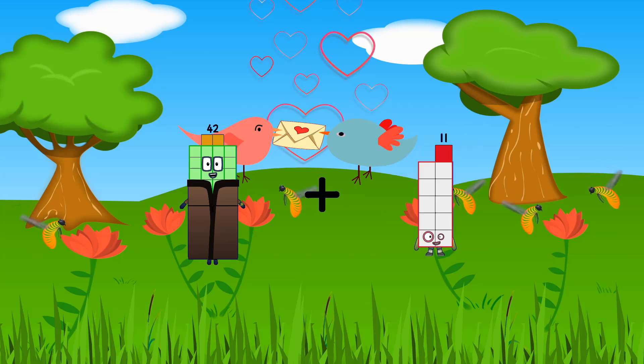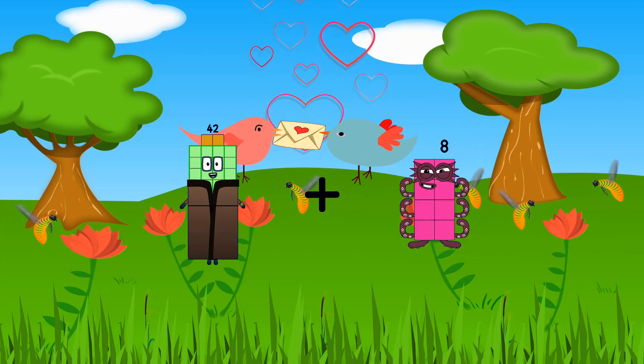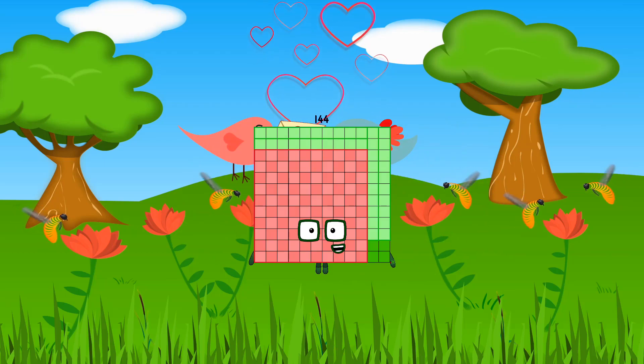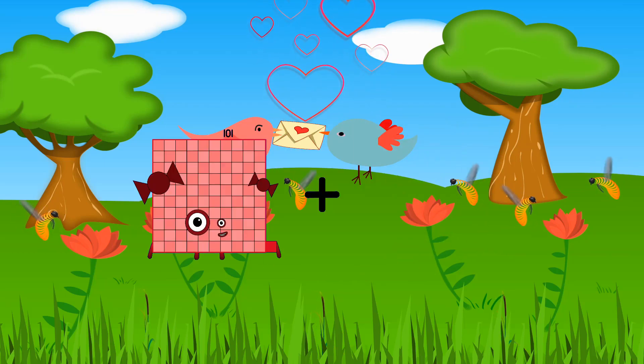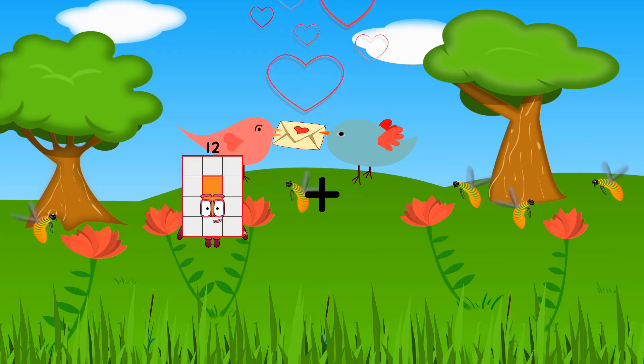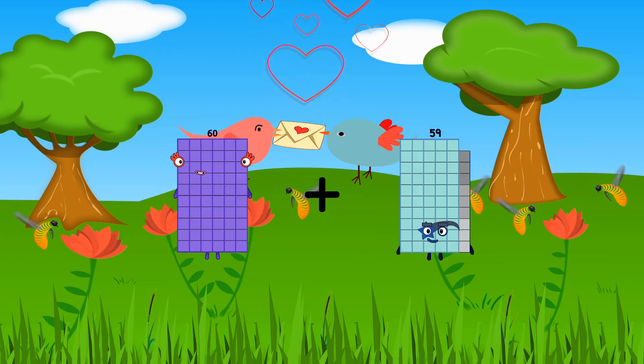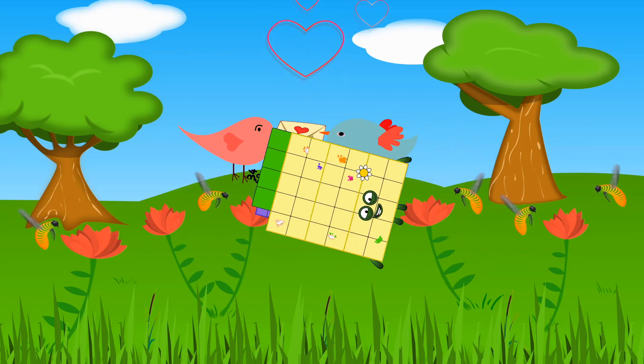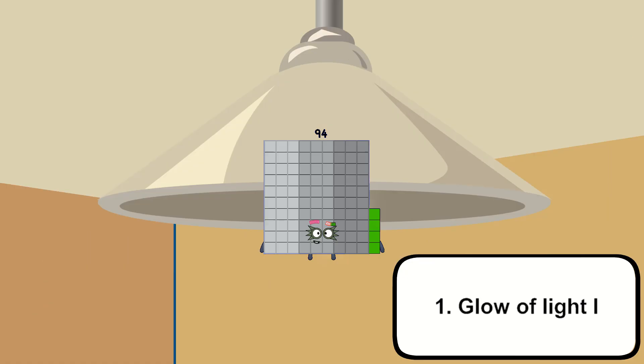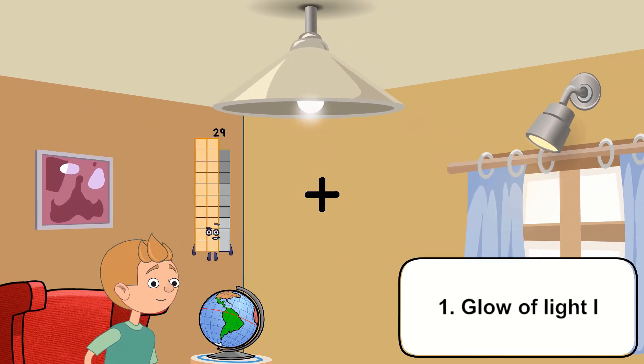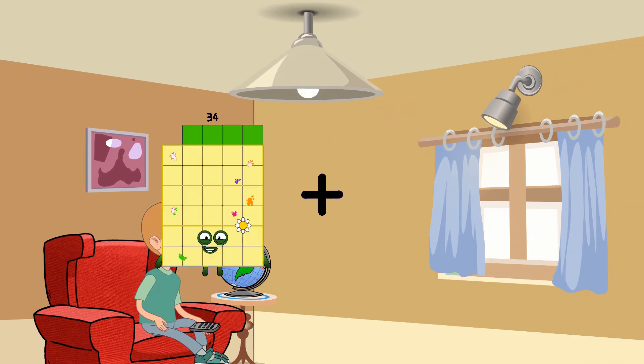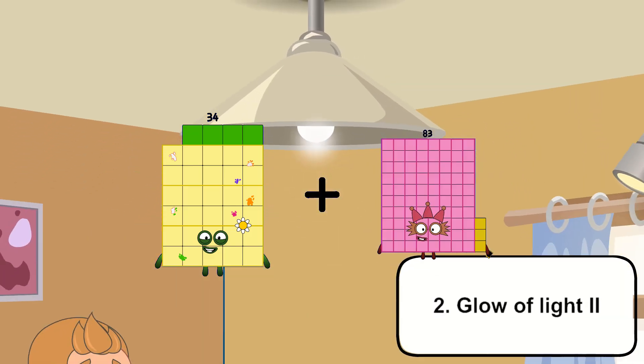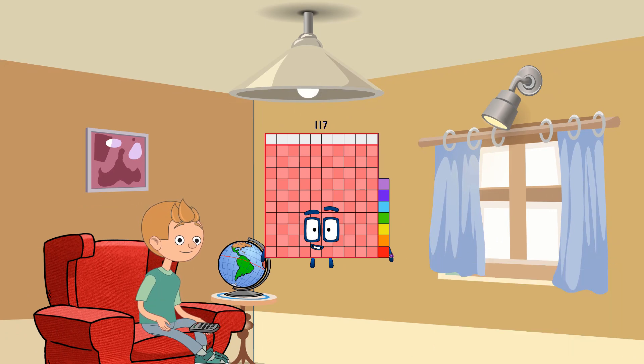42 plus 102 equals 144. 60 plus 34 equals 94. 34 plus 83 equals 117.